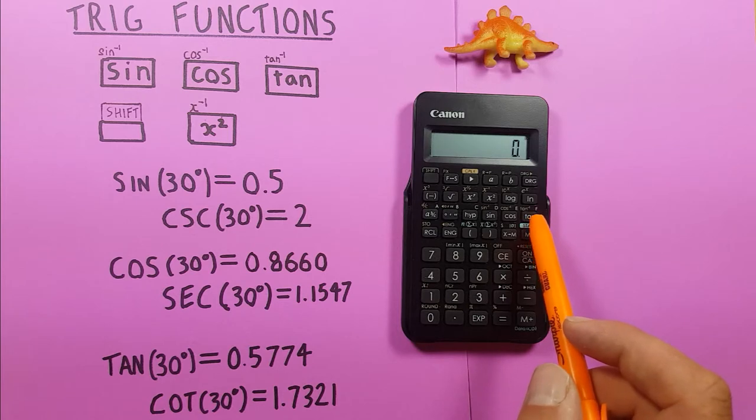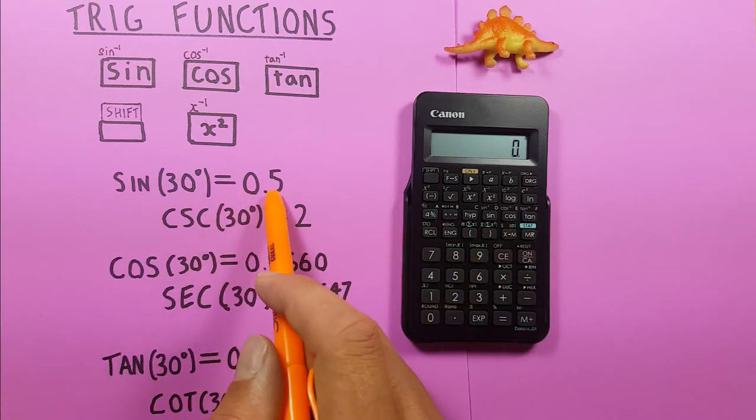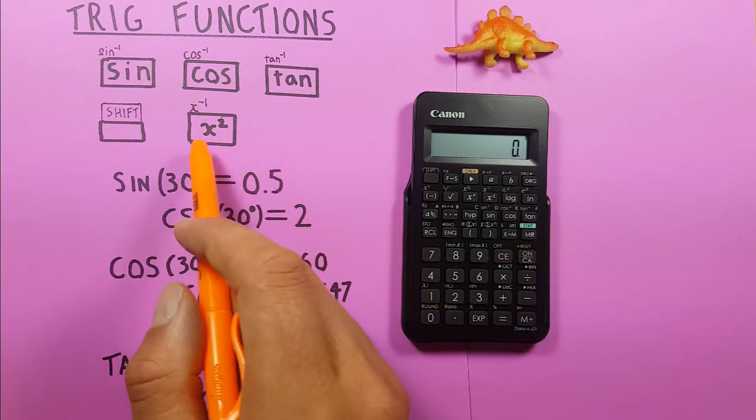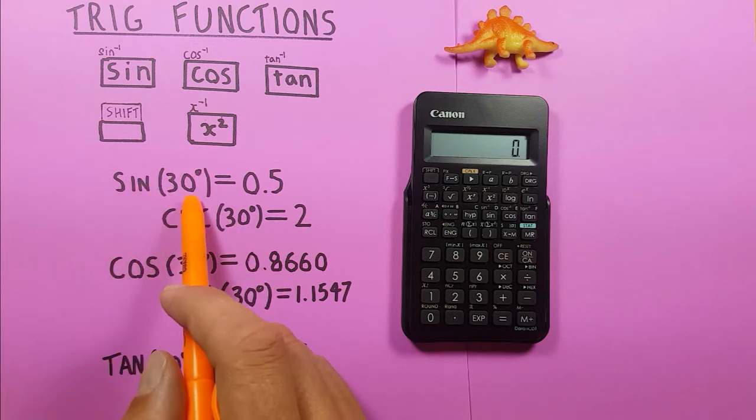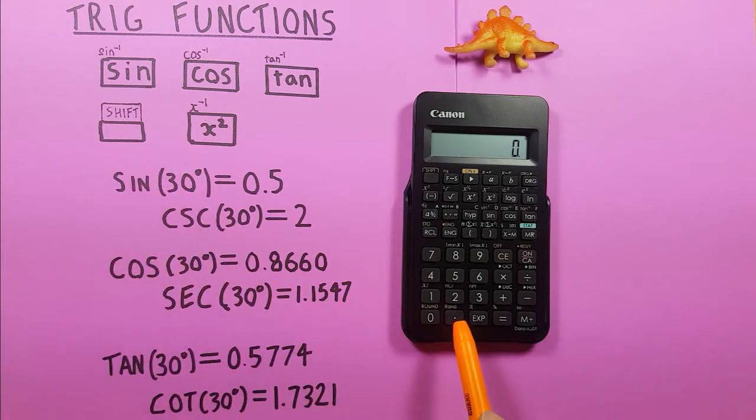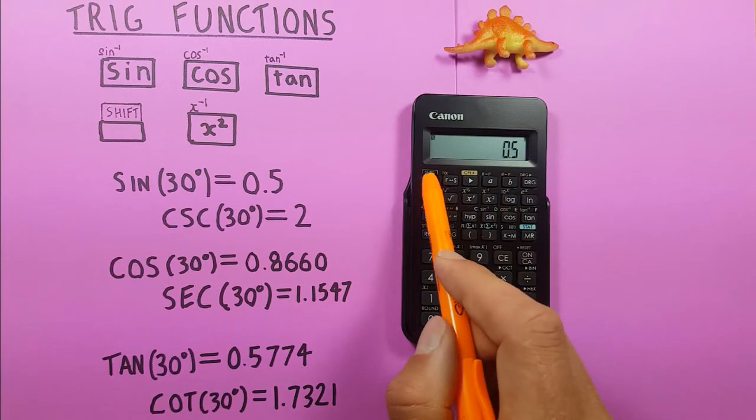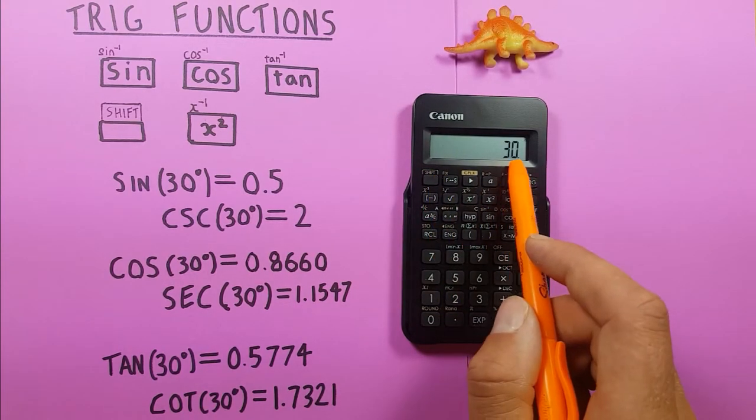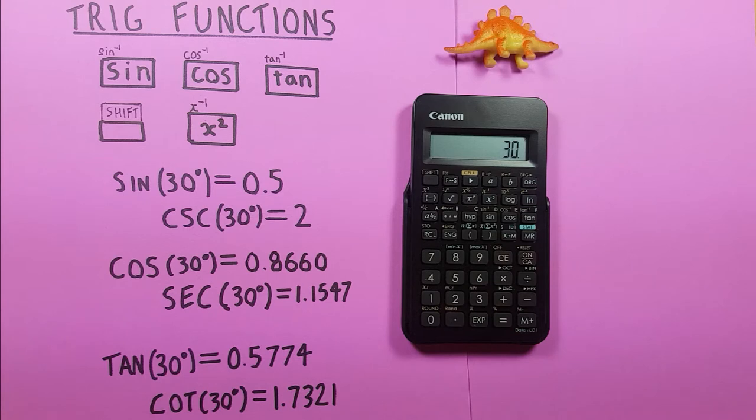And what this does is allow us to go from the 0.5 we solved for back to determine how many degrees were used. So if we place the 0.5 on the screen and then press shift sine you can see it gives us 30 degrees.